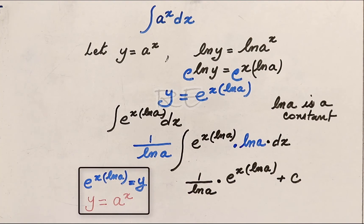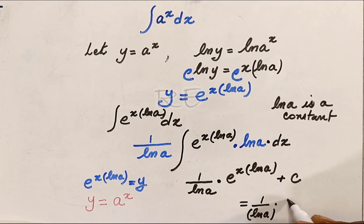Therefore, our answer is 1 over ln a times a to the x plus c. And remember what we set out to find. We set out to find the integral of a to the x dx.